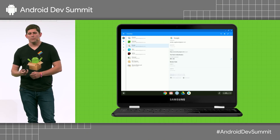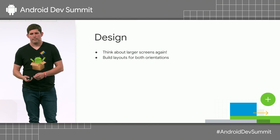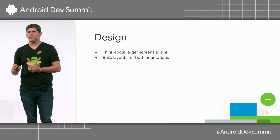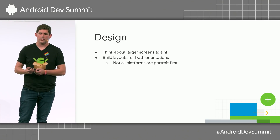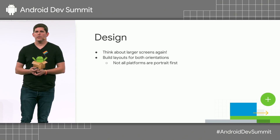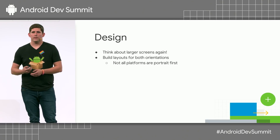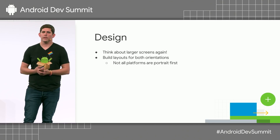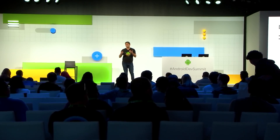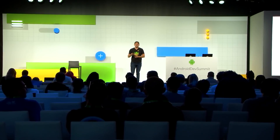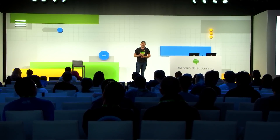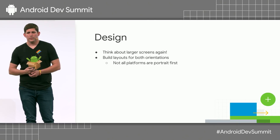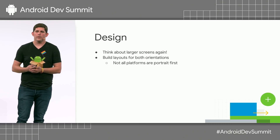Also being able to showcase more information at the same time. The key point is just building layouts for both orientations. Not all platforms are portrait first — a lot of desktop environments, if you're only building for portrait, you're going to have a bad user experience in full screen or even just the top half of the screen during multitasking. Resizing capabilities allow the user to make your app whatever size, orientation, or screen ratio they want, so you really want to let the user decide how they use your app.